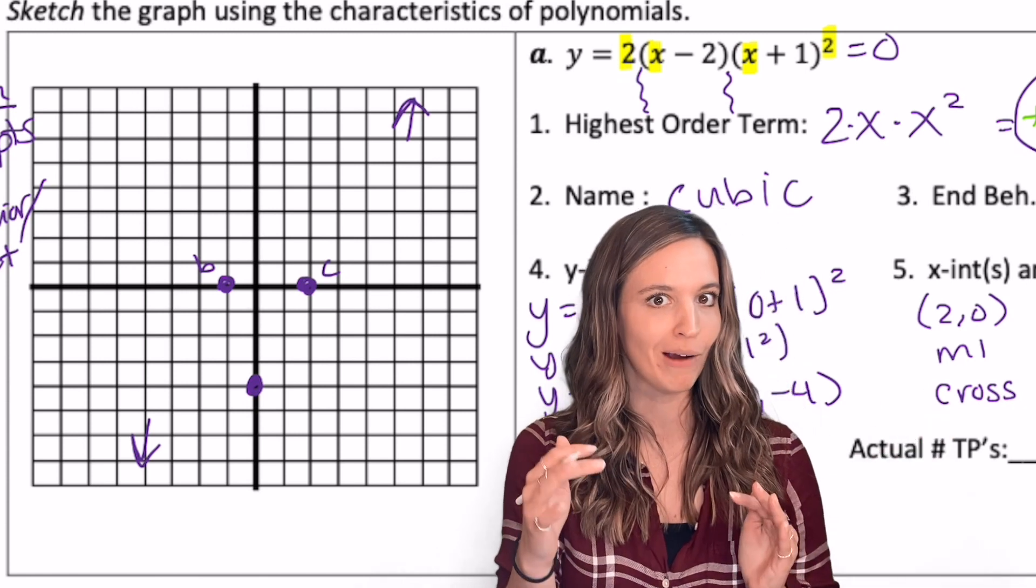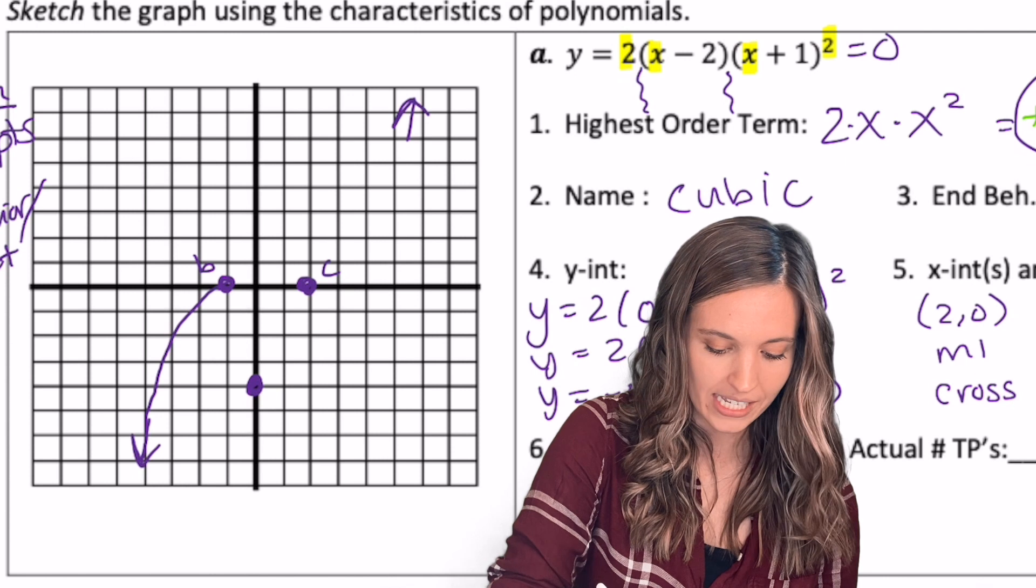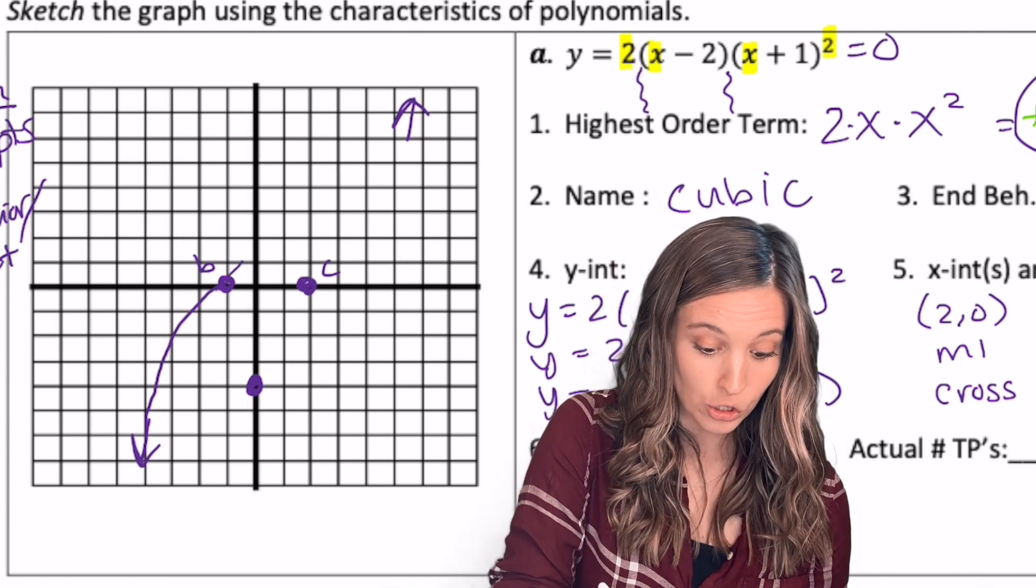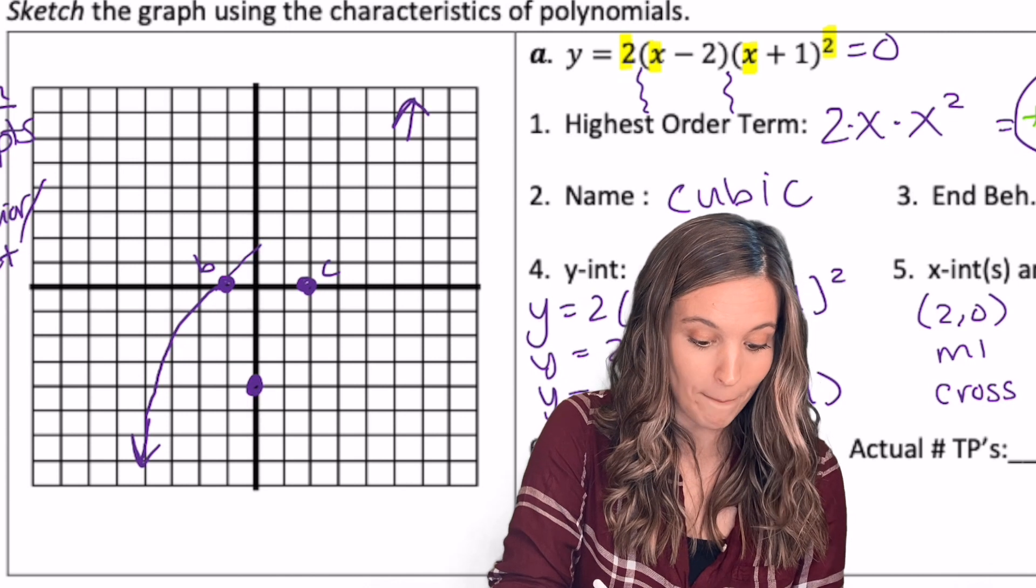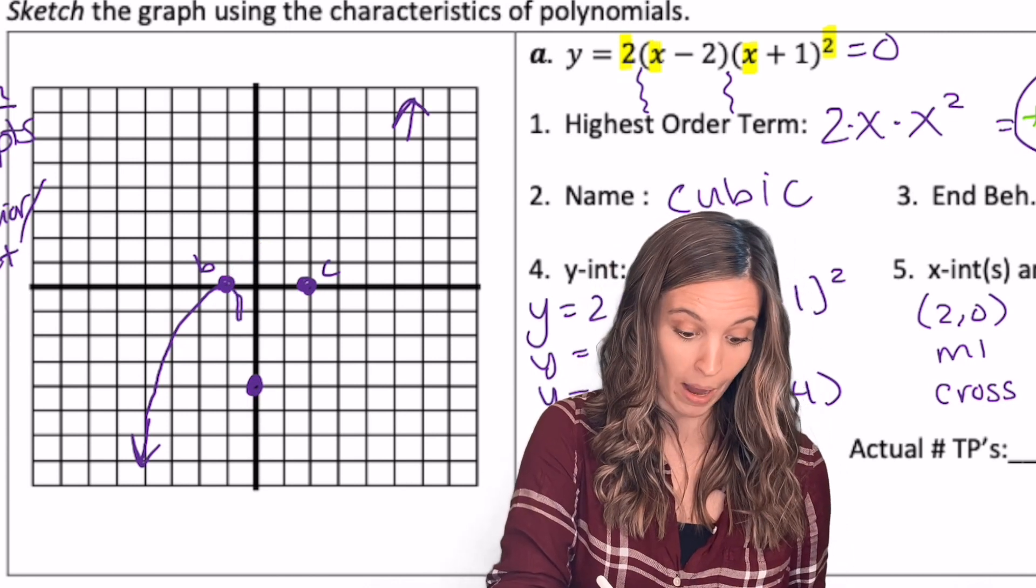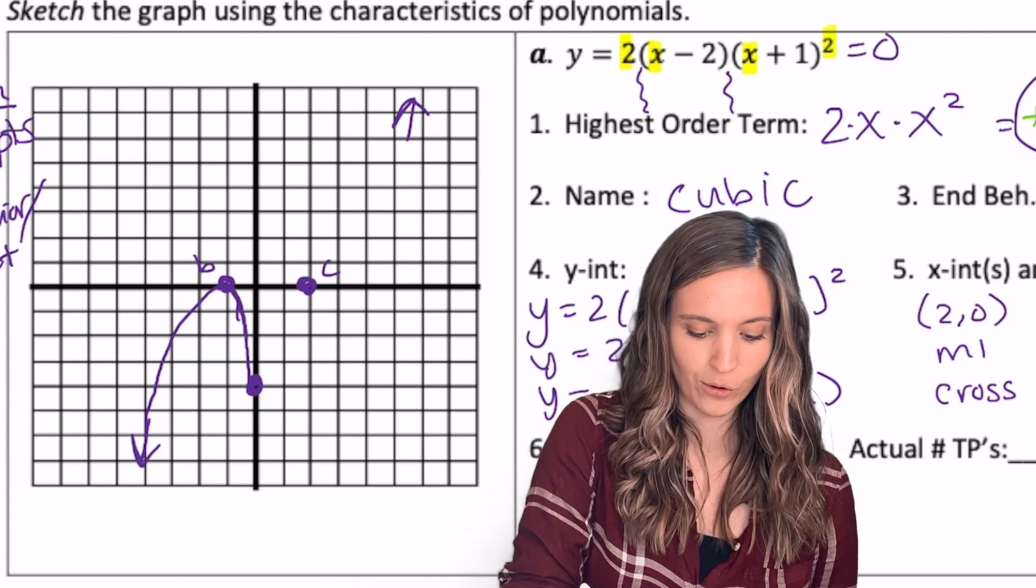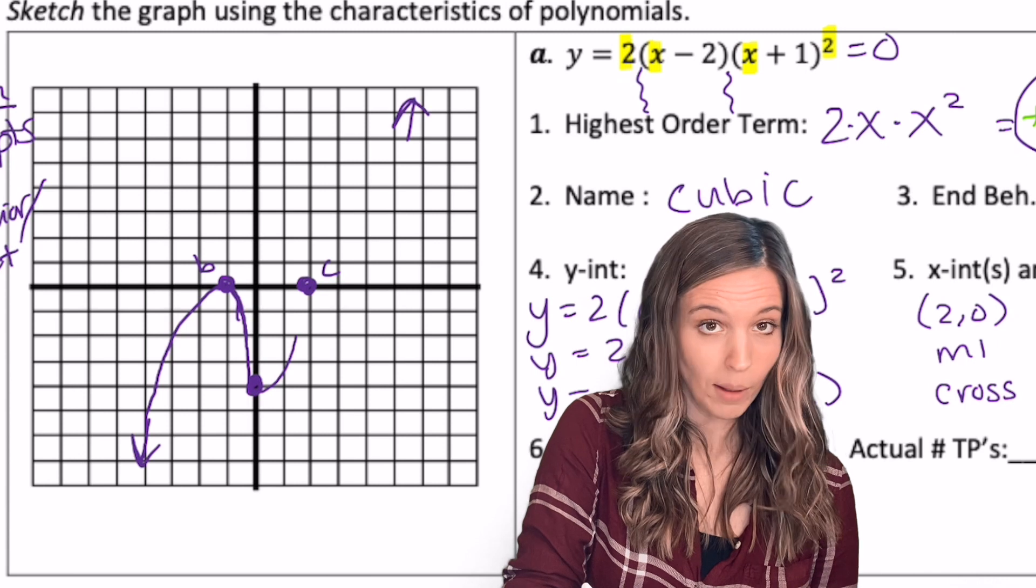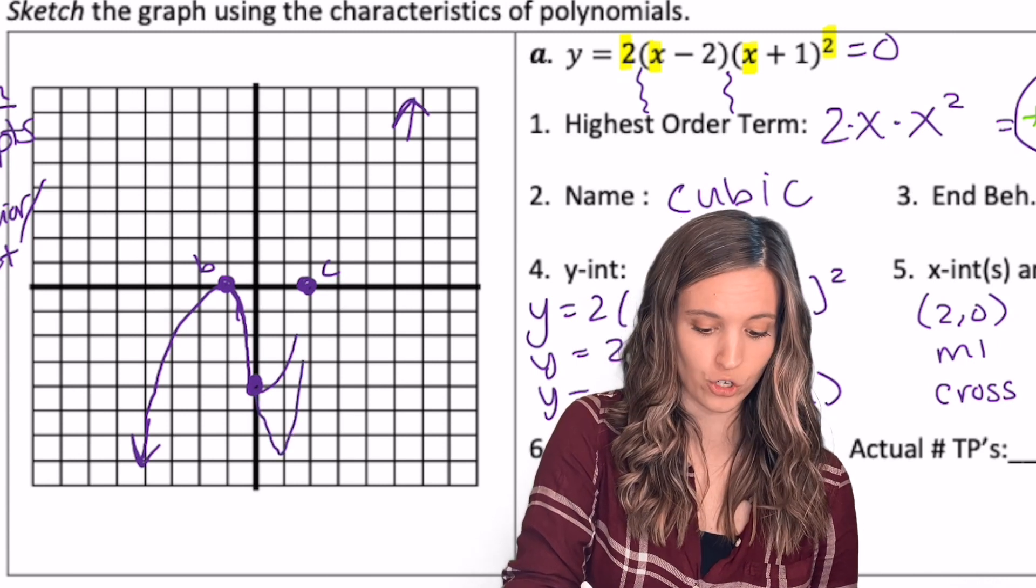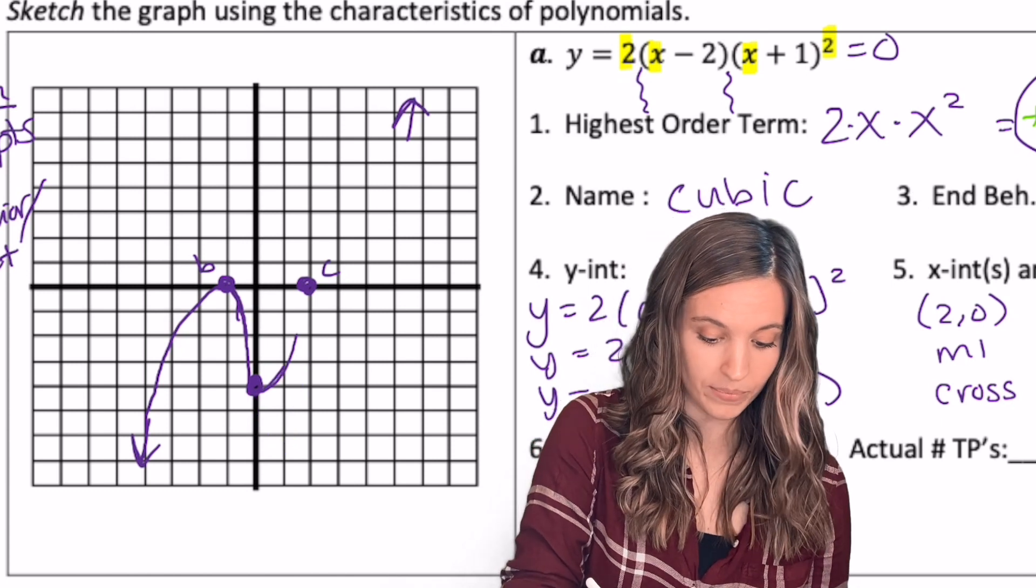I'm going to connect from left to right. So I'm starting down here at negative infinity. I'm headed up to that x-intercept. That x-intercept is at bounce. So I'm not going to cross through it. I'm going to bounce off of it. So that helps me because then I can head down to my y-intercept. Now here's where I'm not really sure what happens to the graph. I could either head straight up to my next x-intercept, or I could head down first and then head straight up. So since I'm not sure, I'm going to go ahead and head straight up to that x-intercept.